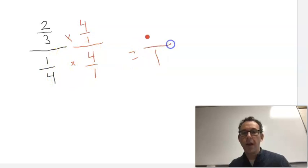And we're left on the top with two-thirds times four over one, which was our Keep Switch Flip from the beginning, and that is eight-thirds, and any number over one is just the number itself. So our answer is eight-thirds.